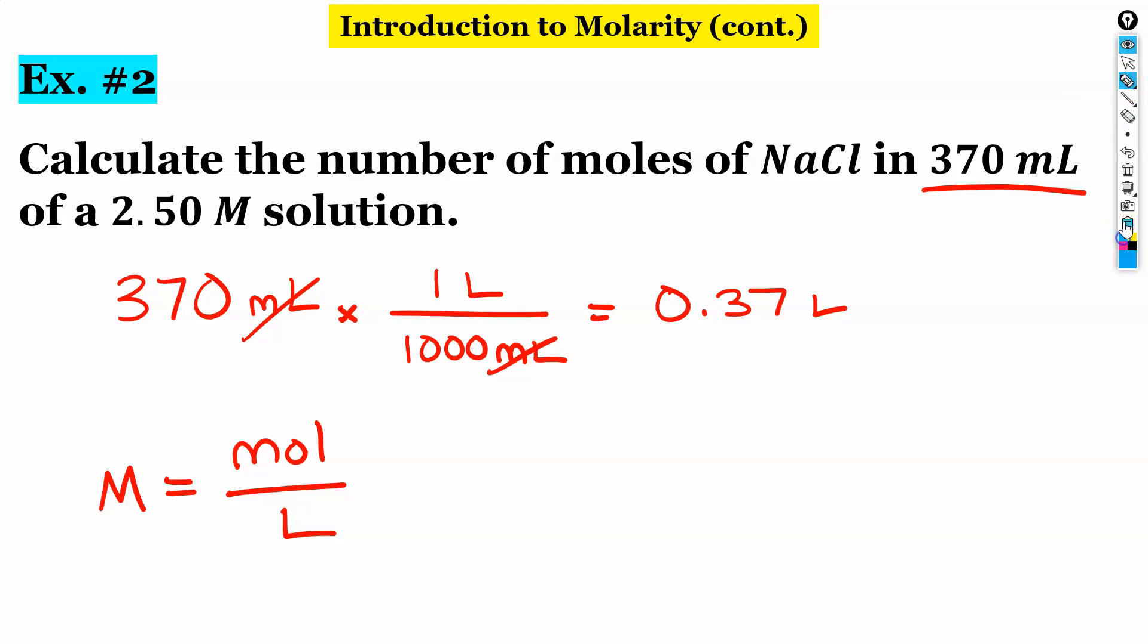So in this case, we have molarity and we have our volume. So we need to do a little bit of algebra here to rearrange our equation. We want to get moles by itself. To get moles by itself, I'm going to multiply both sides by liters. So in rearranging our equation, it'll look like this. Moles equals capital M times volume.